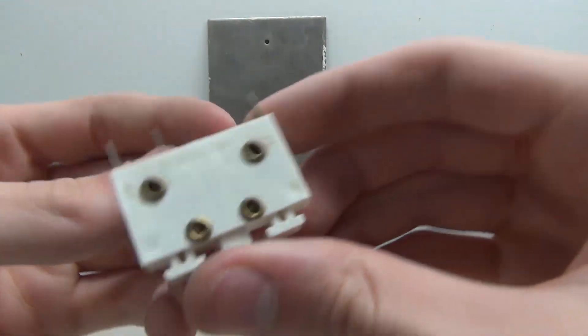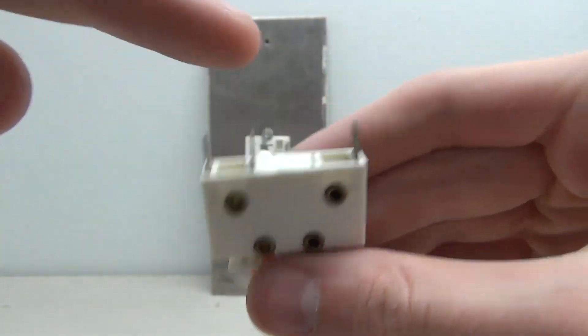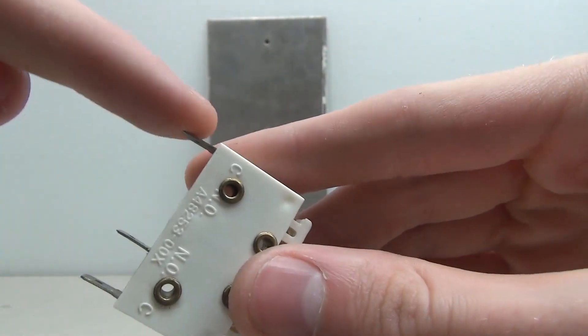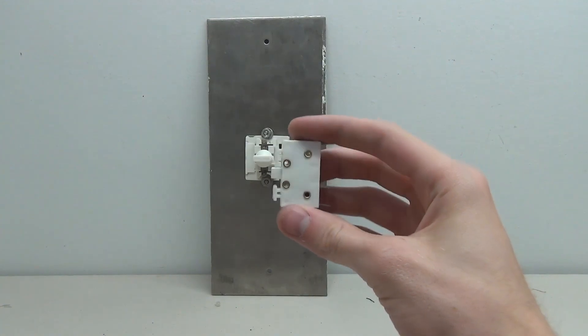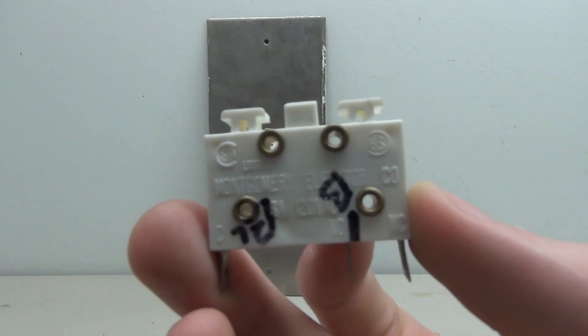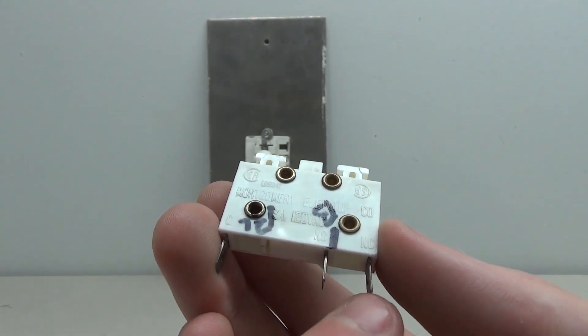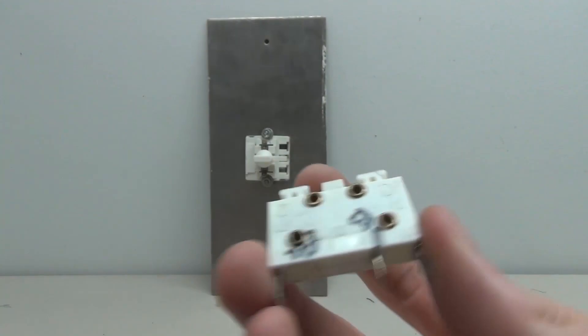And what's kind of interesting is these are a little bit different. So this one has a common and normally open, common normally open. You can see this common doesn't actually do anything. Where if I remove the switch off of this button, we can actually see this is a Montgomery branded switch and it's got a common, normally open, and normally closed. So that's kind of interesting.